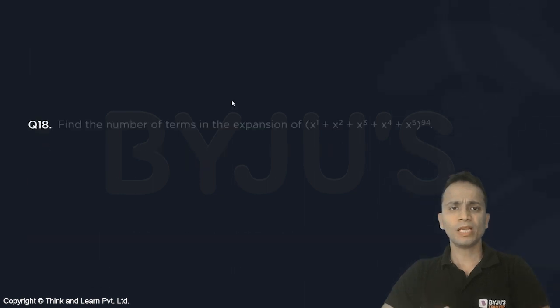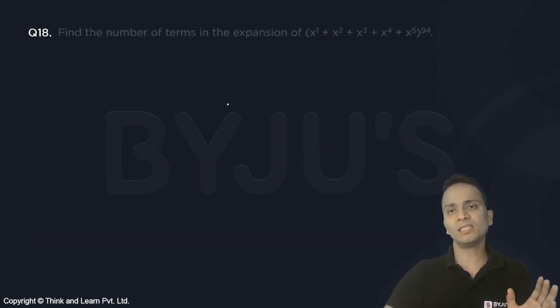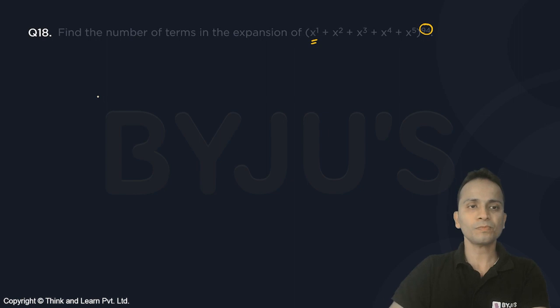Now if we look at the minimum power of x in the expansion, it will be obtained from x raised to the power 1 whole raised to the power 94, that means x raised to the power 94. So 94 will be the least power of x in the expansion.